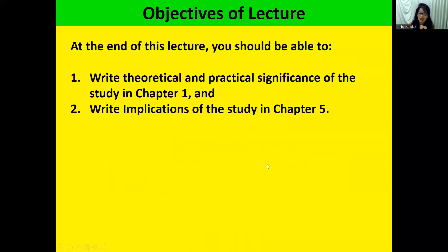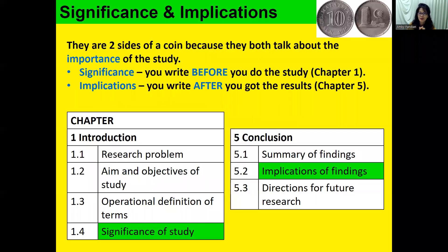At the end of the lecture, you should be able to: number one, write the theoretical and practical significance of the study in chapter one; and number two, write the implications of the study in chapter five, because these two are connected — two sides of a coin. Significance and implications both talk about the importance of the study.